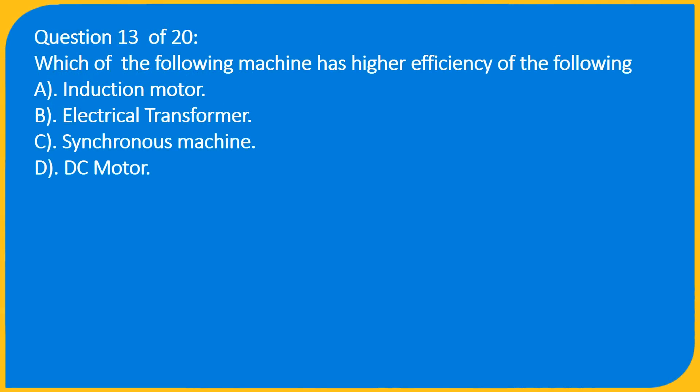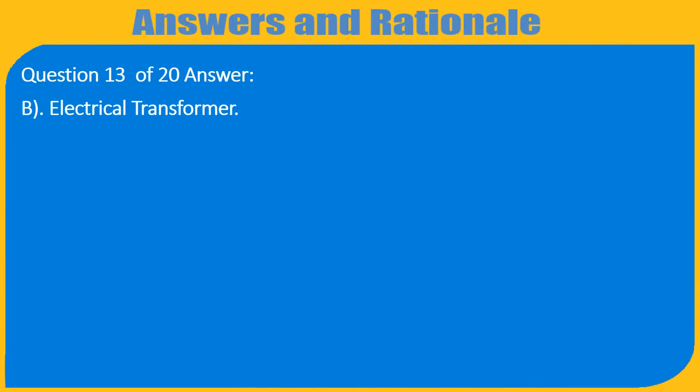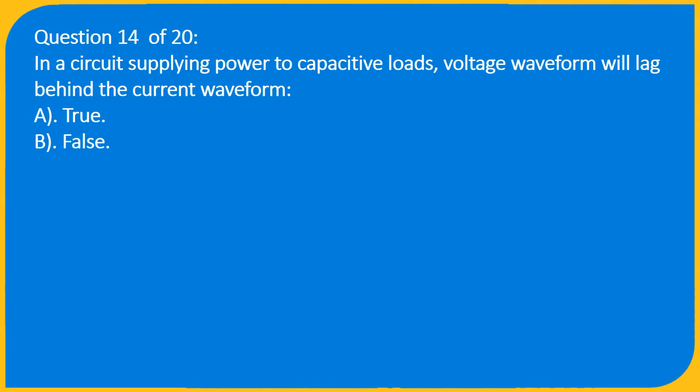Question 12 of 20: Which of the following machines has the higher efficiency? A. Induction motor, B. Electrical transformer, C. Synchronous machine, D. DC motor. Answer: B. Electrical transformer.